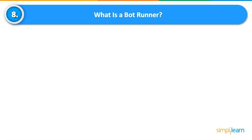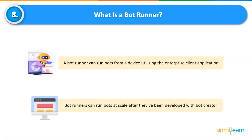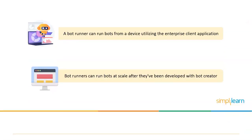What is a Bot Runner? A Bot Runner has the ability to run bots from a device utilizing the Enterprise Client application. The device is registered with the Enterprise Control Room after the Bot Runner user logs in for the first time, and the user can deploy bots on that device. Bots are run by Bot Runner, which is a software machine. Bot Runners can run bots at scale after they have been developed by the Bot Creator.